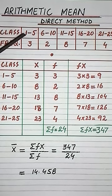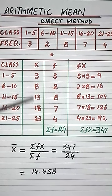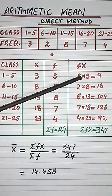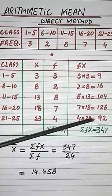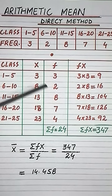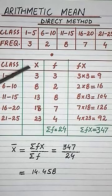We take this grouped data and first add the column of class marks x, then add the column of fx. This fx column is made by multiplying the columns of f and x.